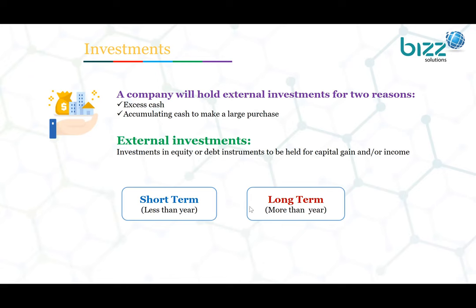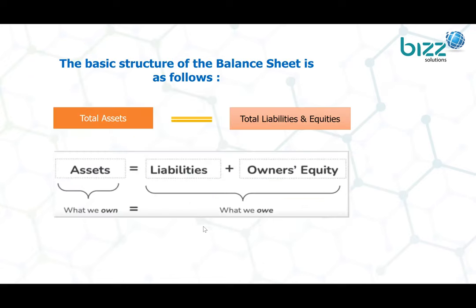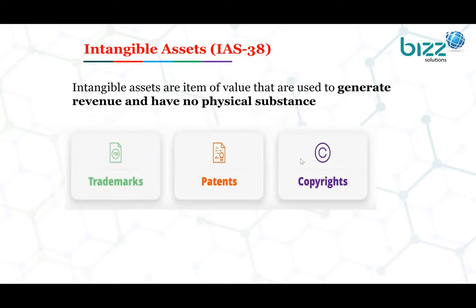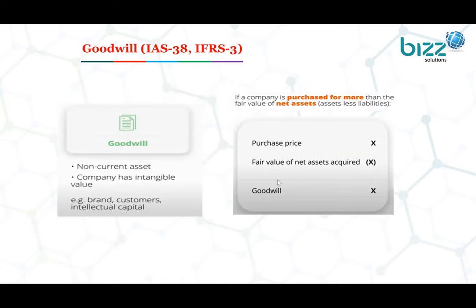Short-term investments are less than one year, while long-term investments are more than one year. The accounting equation is: Assets equal Liabilities plus Owner's Equity. Intangible assets such as trademarks, patents, and copyrights are also part of assets. Goodwill arises from business combinations or business acquisitions.